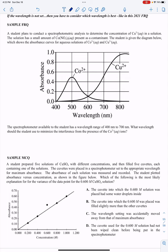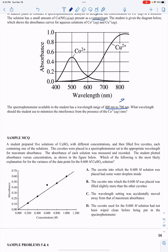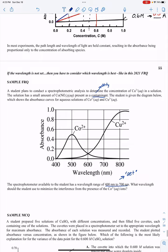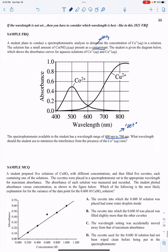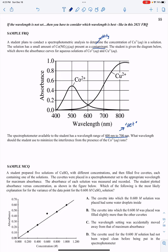A student plans to conduct a spectrophotometric analysis to determine the concentration of Cu2+ in a solution. The solution has a small amount of cobalt present as a contaminant. The student is given a diagram which shows the absorbance curves for aqueous solutions of cobalt and copper. The spectrophotometer available has a wavelength range of 400 to 700 nanometers. That's where you set to a specific wavelength. This can help us understand quantities. We can set instruments to a specific wavelength depending on the color of our solution.